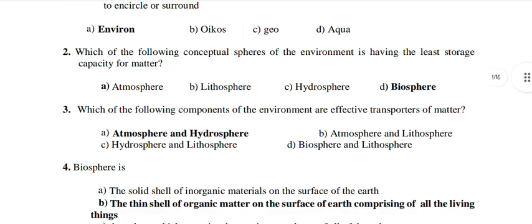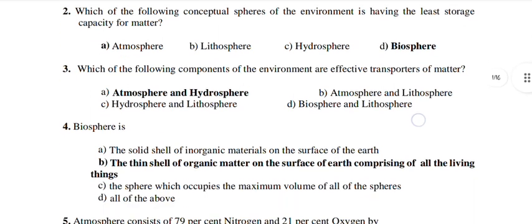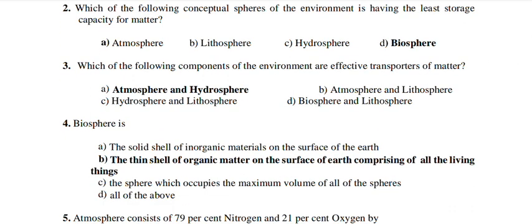Which of the following conceptual spheres of the environment has the least storage capacity for matter? The answer is D — Diviosphere. Which of the following components of the environment are effective transporters of matter? The answer is Atmosphere and Hydrosphere. Transporters of matter: Atmosphere and Hydrosphere is important.